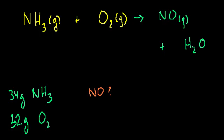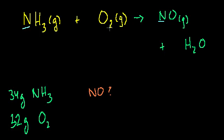This is a stoichiometry problem, so the important thing first is to make sure we have a balanced equation before we start anything. And lo and behold, we don't have a balanced equation. Let's confirm that. We have one nitrogen on each side — that looks balanced. We have three hydrogens on the left-hand side. The pattern is: start with the complicated stuff, leave the single-atom molecules for last, because those you can fix at the end without messing anything else up.